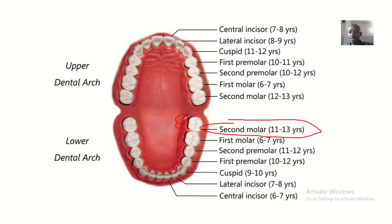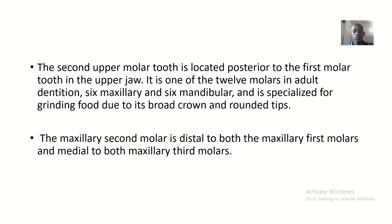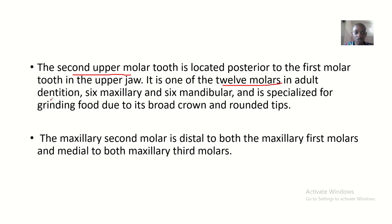Let's first talk about what the second upper molar tooth is. It is located posterior to the first molar tooth. It is one of the 12 molars in adult dentition. In adult dentition, we have six molars in the maxilla and six molars in the mandible.